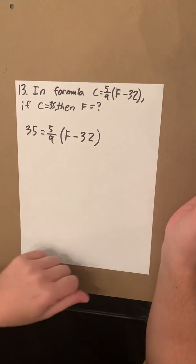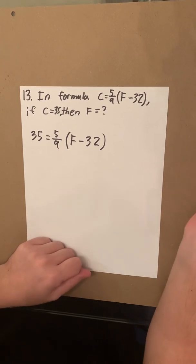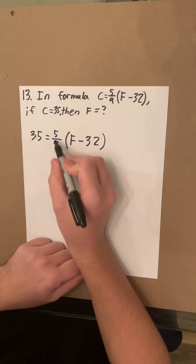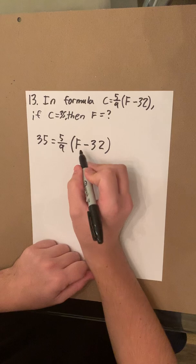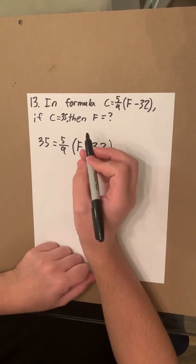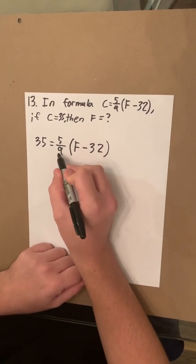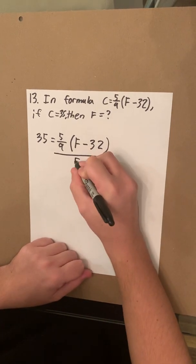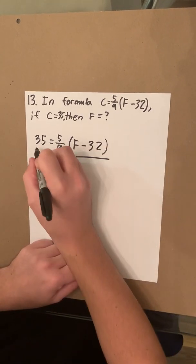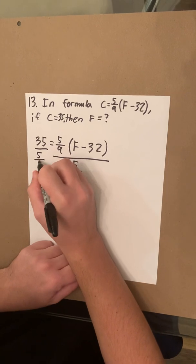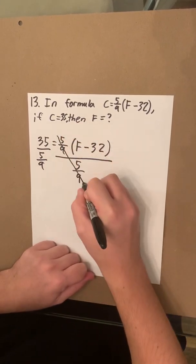Now this one's actually going to be a complicated one, so I will try to explain everything as thoroughly as possible. So first we need to isolate this F, and the first way we can do that is by dividing 5 over 9 to both sides.